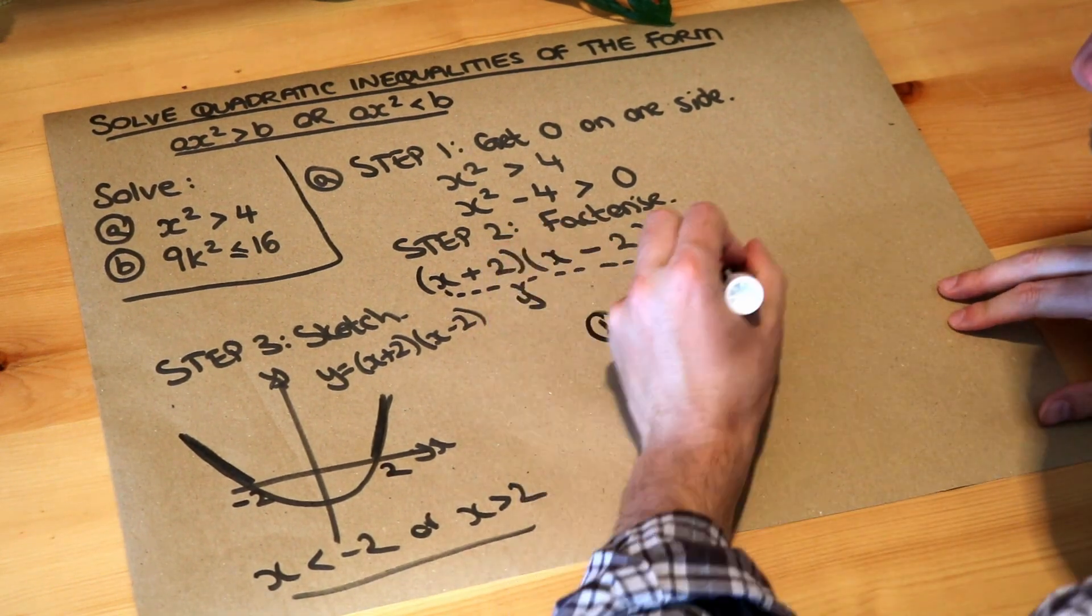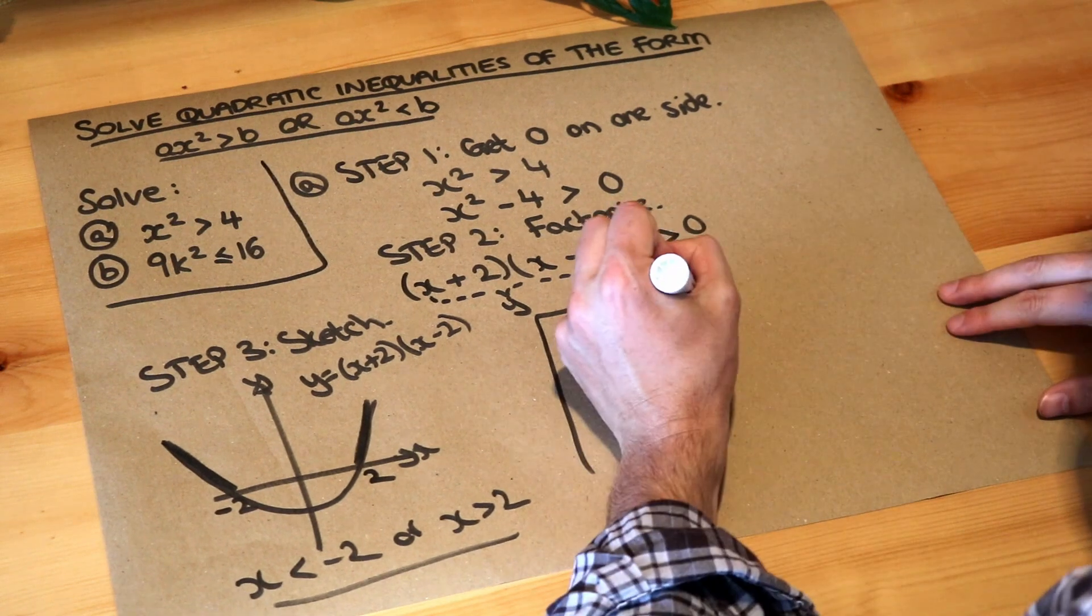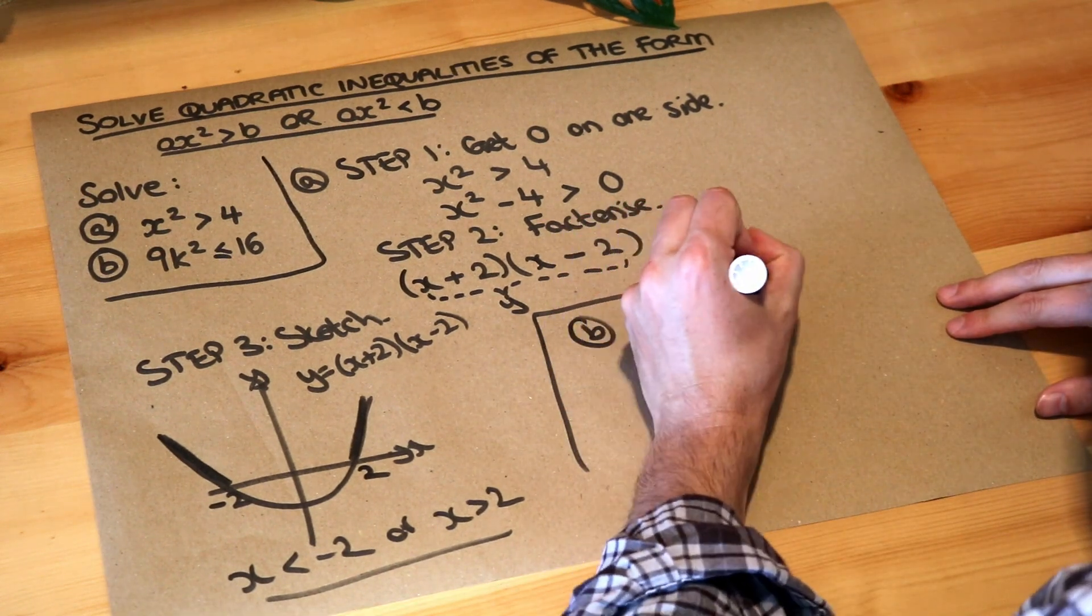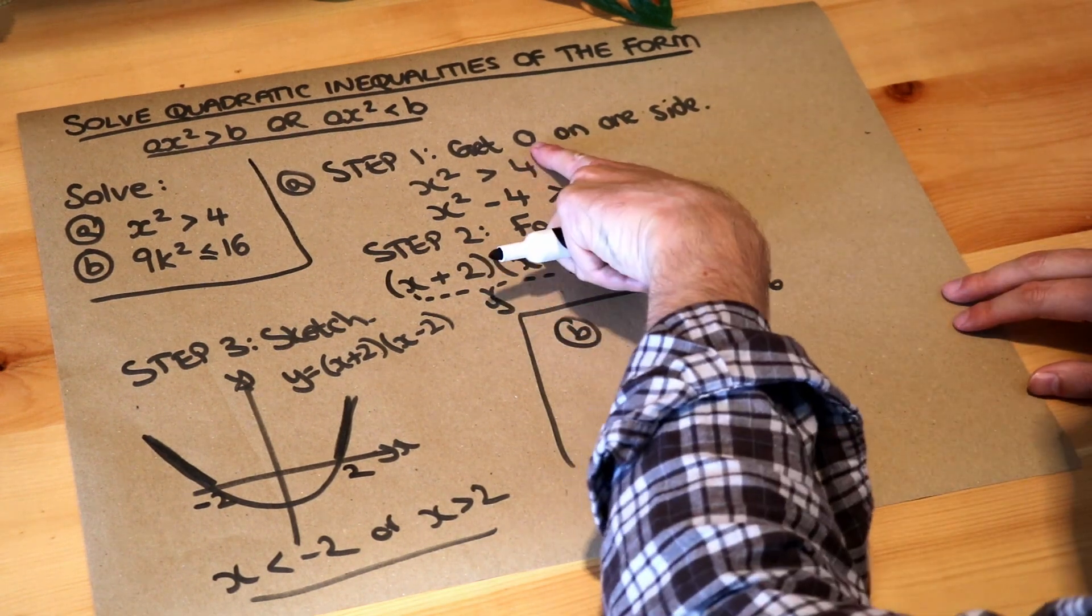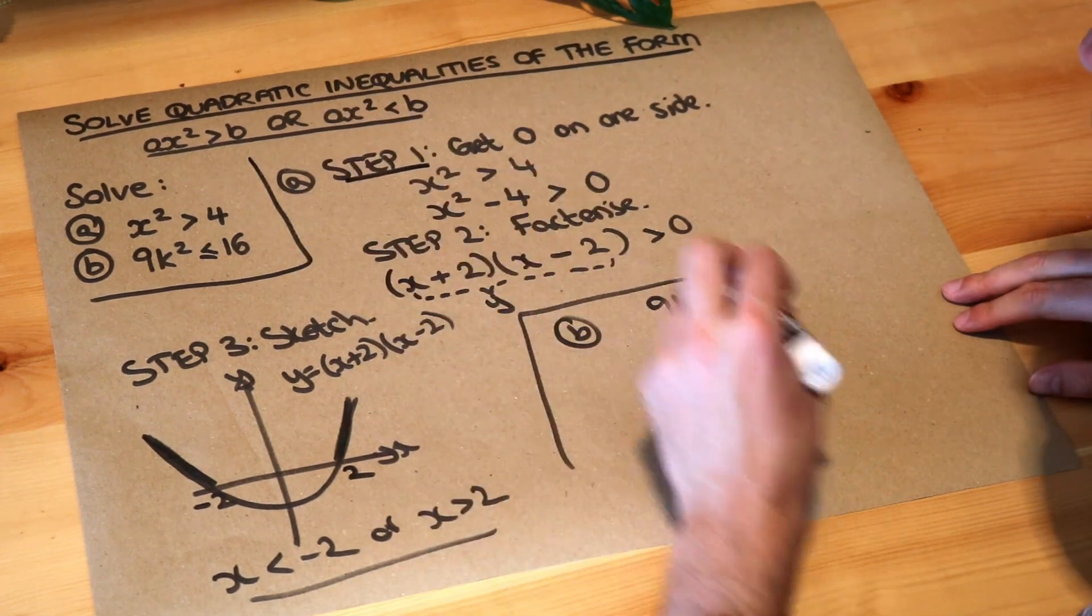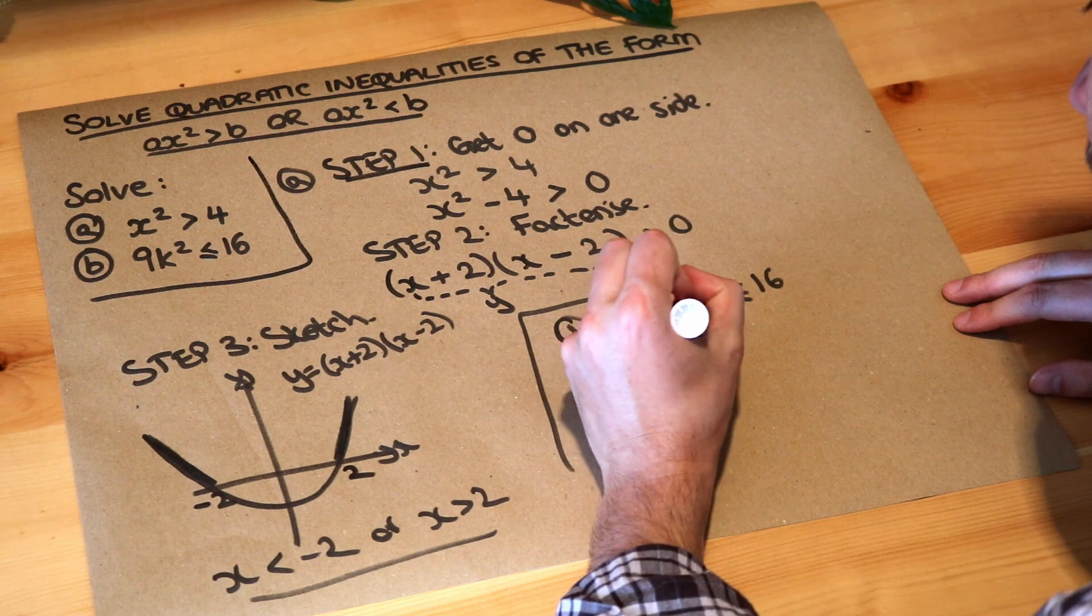What about part B? Well, we've got 9k squared is less than or equal to 16. We do exactly the same as we did before. We get 0 on one side—that's step 1. So we subtract the 16.